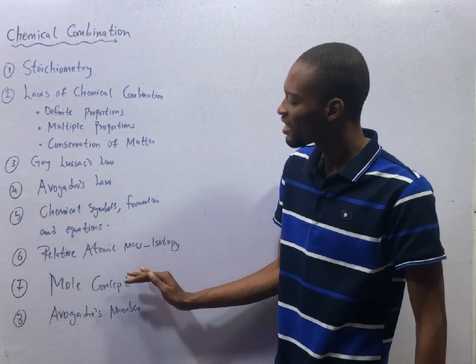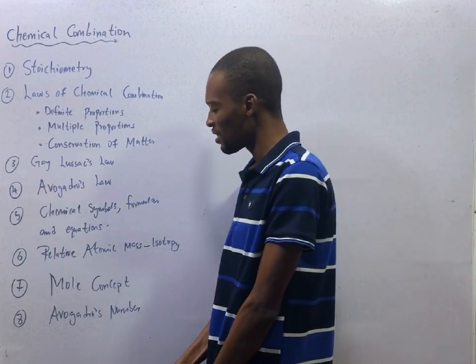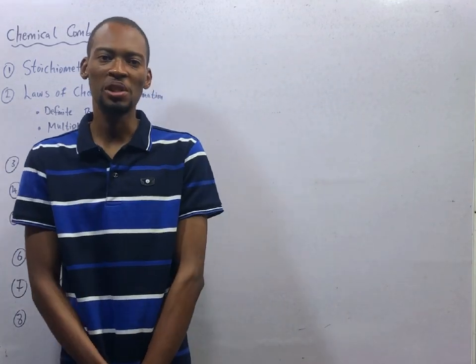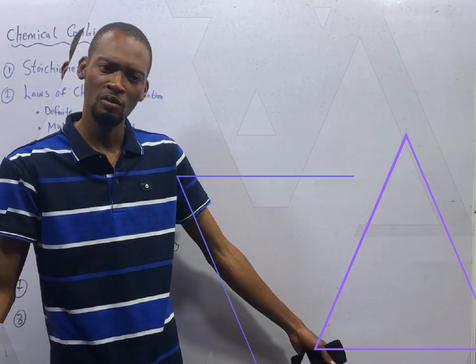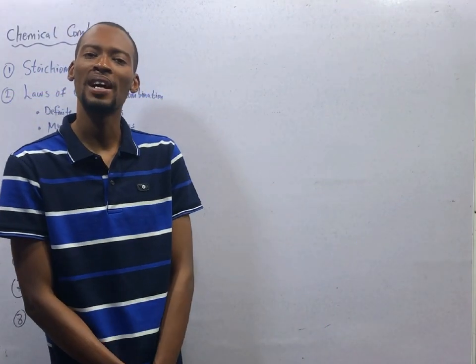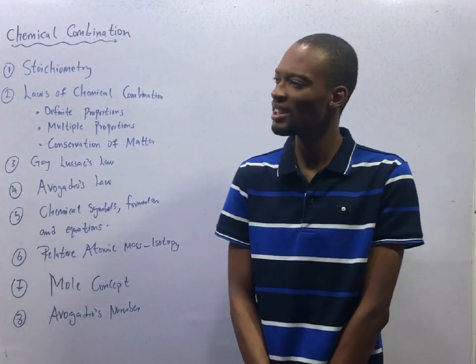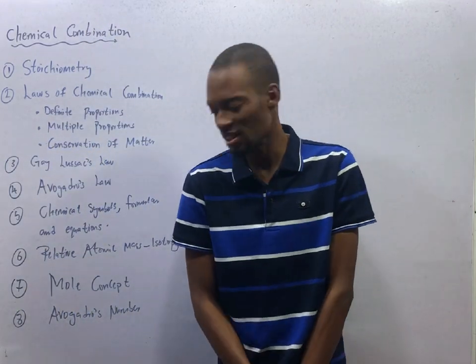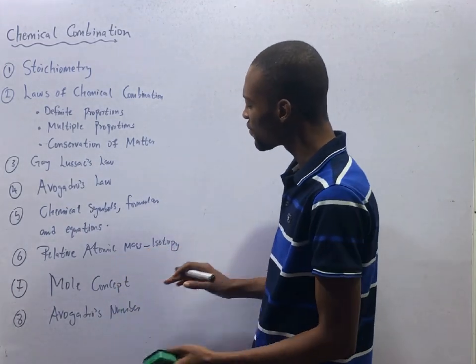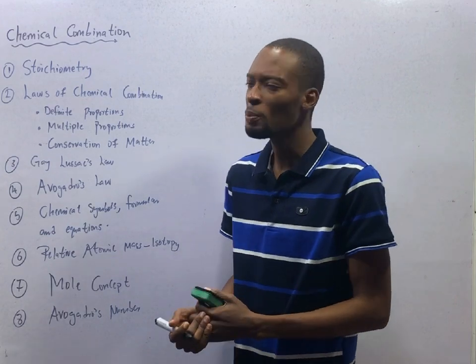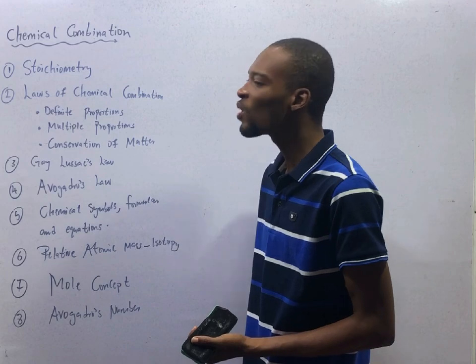Relative atomic mass, isotopy - masses of all elements are not whole numbers because of isotopy. When you see an atom with the same atomic number, they have different atomic mass. Chlorine, not chlorine-37, chlorine-35, the same chlorine in different masses. That is isotopy. So how do we then calculate to arrive at the relative atomic mass of chlorine to be 35.5?